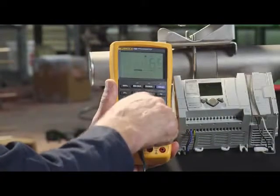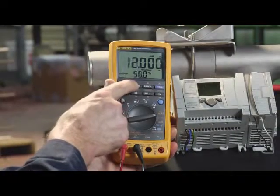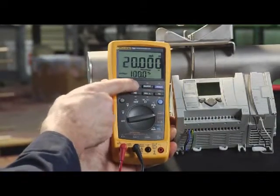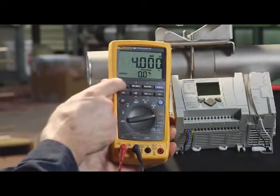In the milliamp function, the built-in loop calibrator sources a 4 to 20 milliamp signal to test devices with a 4 to 20 milliamp input, such as a PLC I/O or analog milliamp indicators.